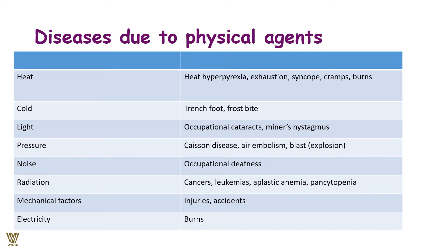Diseases due to physical agents: heat — heat apyrexia, exhaustion, syncope, cramps, and burns; cold — trench foot and frostbite; light — occupational cataract and miner's nystagmus; pressure — caisson disease, air embolism, and blast injuries; noise — occupational deafness; radiation — cancer, leukemia, aplastic anemia, and pancytopenia. Mechanical factors lead to injuries and accidents; electricity leads to burns.